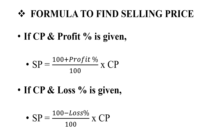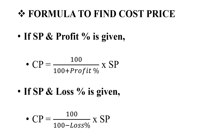We will go to the selling price formulas. SP with profit percentage: SP is equal to 100 plus profit percentage divided by 100 into CP. SP with loss percentage: SP is equal to 100 minus loss percentage divided by 100 into CP. For cost price with profit percentage: CP is equal to 100 divided by 100 plus profit percentage into SP. For cost price with loss percentage: CP is equal to 100 divided by 100 minus loss percentage into SP.